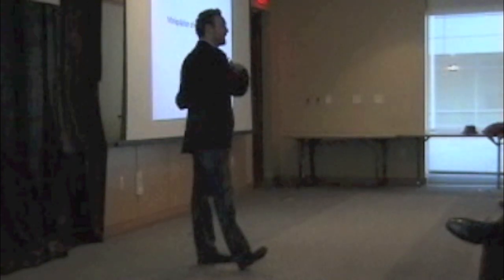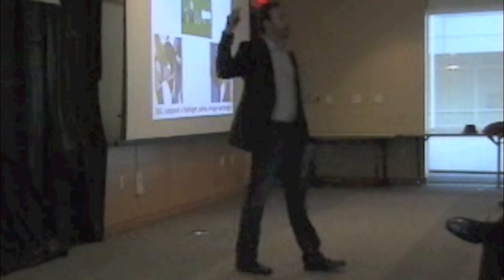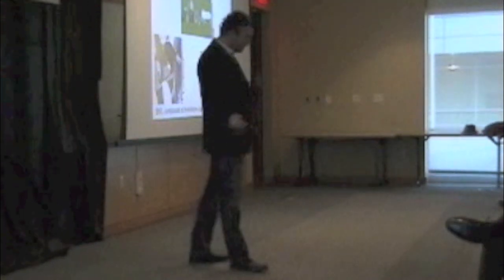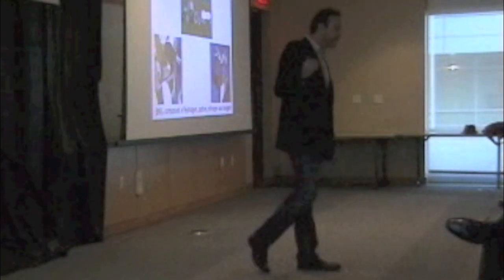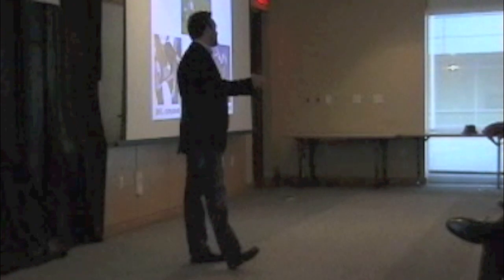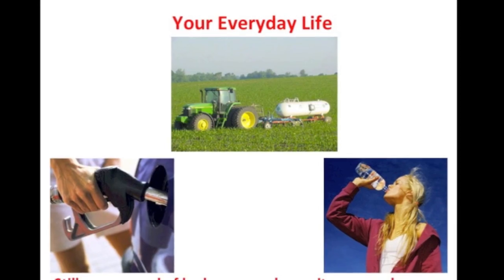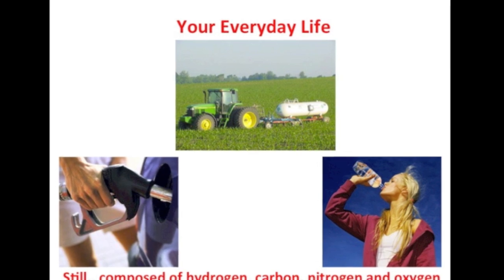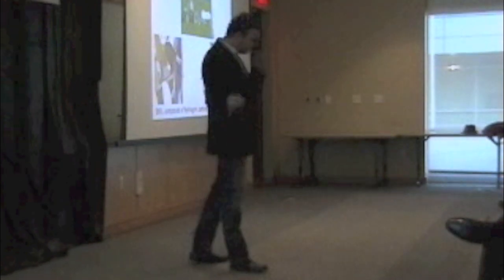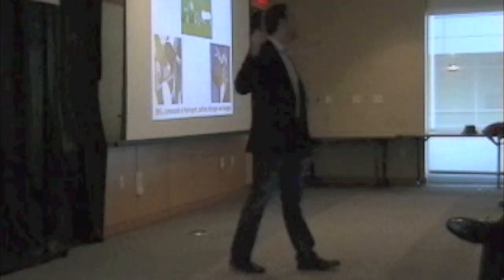Over the past 100 to 150 years or so, humanity has become very good at figuring out how to manipulate these molecular structures. Each one of these natural resources has unique molecular structures. What we do is take these structures — these hydrogens, carbons, nitrogens, and oxygens — we break them down, cut them apart, and then build them back up into whatever we need for our everyday life. That's basically the goal behind using natural resources and how we manipulate these atoms.